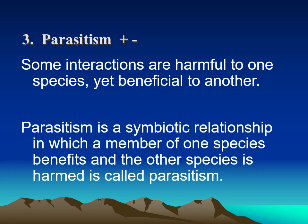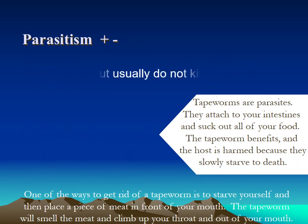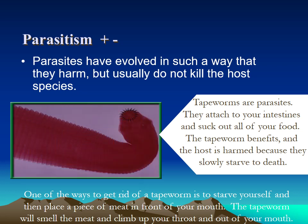Now we come to the third type: parasitism. One organism gets something good and the other is harmed. Parasitism is a symbiotic relationship in which a member of one species benefits — that's your plus sign — and the other species is harmed — that's your negative. Parasites are organisms that live in or on another organism and steal the nutrients. Parasites do not want the host to die, because if the host dies the parasite dies — however, sometimes hosts do die; that's just not the goal.